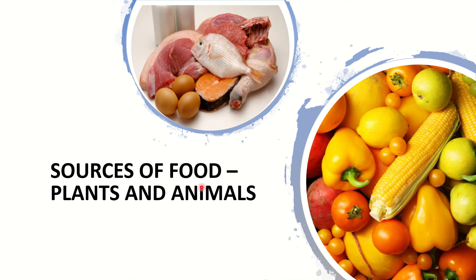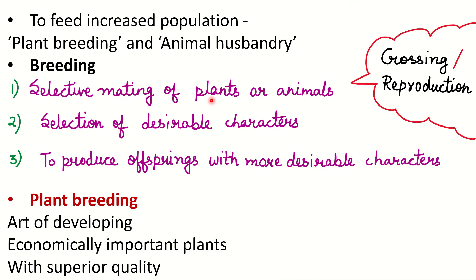We get food from two sources: plants and animals. From plants we get fruits, vegetables, nuts, seeds, and green leaves. From animals we get eggs, meat, and milk. To feed the increased population, we will depend on plant breeding and animal husbandry.